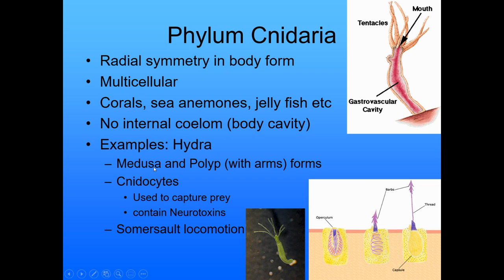The example we're using is hydra, which can exist as a medusa or a polyp — the polyp form is the one with the arms. They have nematocysts, which are stinging cells used to capture prey. These are the reason jellyfish sting you — nematocysts contain neurotoxins, and when disturbed, barbs are shot out delivering the toxin. Hydra can also move by somersault locomotion, where they bend over, pick their foot up, and keep walking.